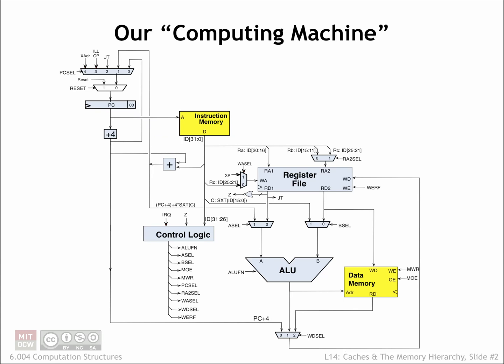In the last lecture, we completed the design of the Beta, our reduced instruction set computer. The simple organization of the Beta ISA meant that there was a lot of commonality in the circuitry needed to implement the instructions. The final design has a few main building blocks with MUX steering logic to select input values as appropriate.